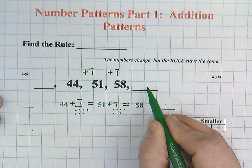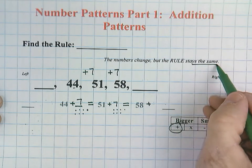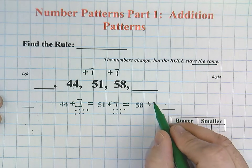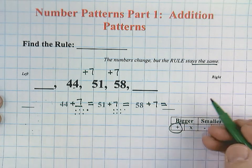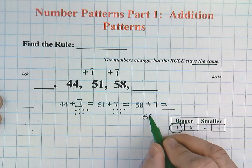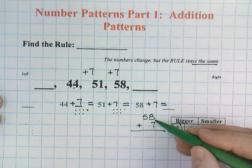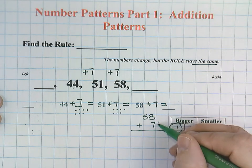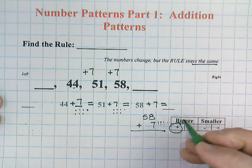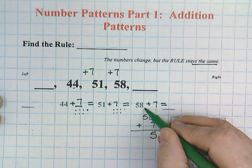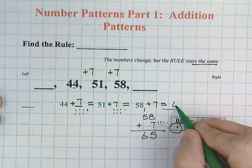How do we find this blank? We're just going to continue using our rule. Remember, the rule stays exactly the same, although the numbers will change. 58 plus 7. We could use an addition strategy: 8 plus 7 [counting to 15]. We regroup our 1. 1 plus 5 would be 6. So we would get 65.